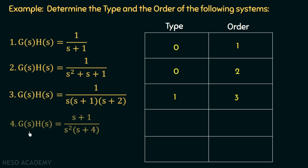Example 4: G(s)H(s) = (s+1) / [s²(s+4)]. Here s² indicates two poles at the origin, so the type is 2 — a type two system. However, the order is not 2. Multiplying s² by s gives s³, so the highest power of s is 3 and the order is three. We can call it a type 2, order 3 system.